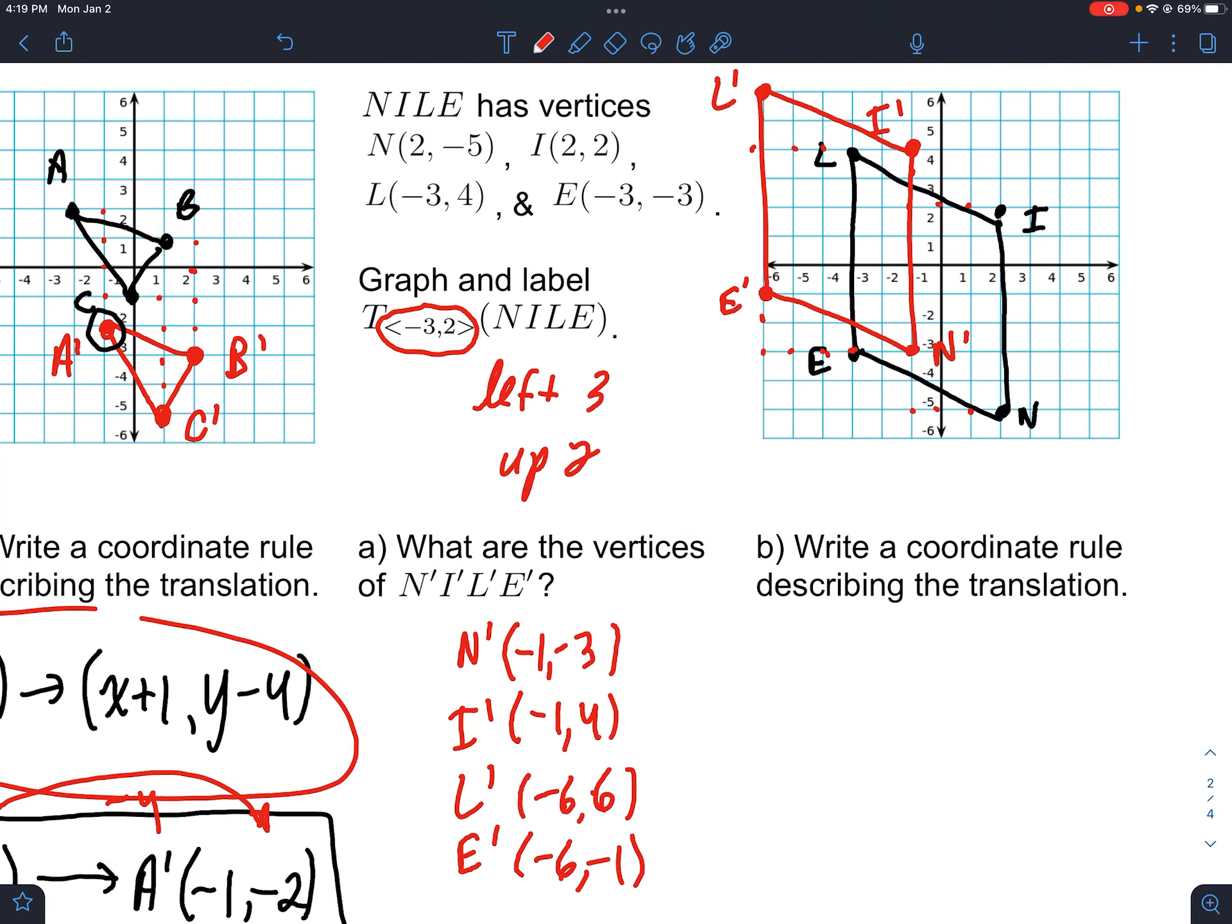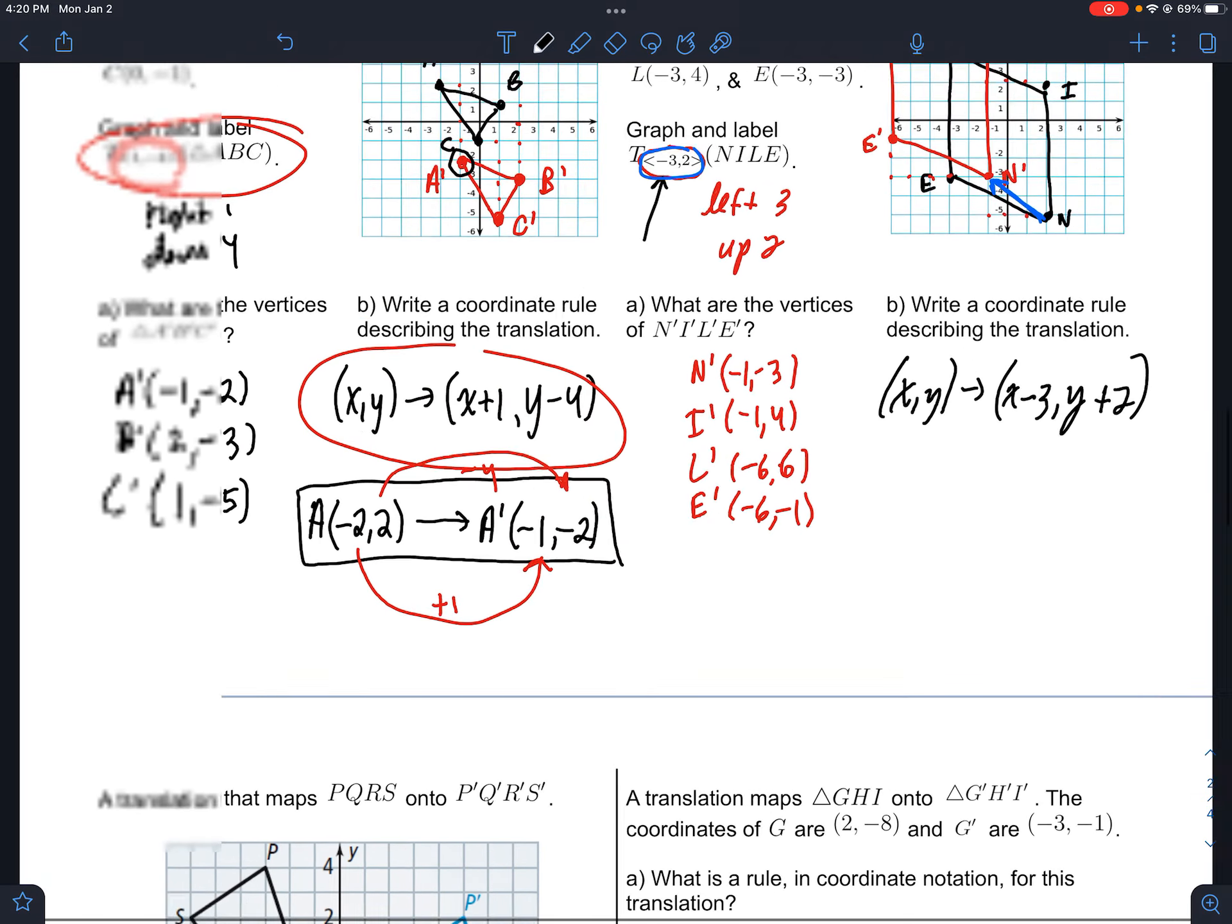The coordinate rule again is, instead of writing it as a vector like that, which by the way, that vector right there is this arrow right here. It's from pre-image to image. It shows where you go in the plane to get there. So how do we do it? You go back 3, and then you add 2.